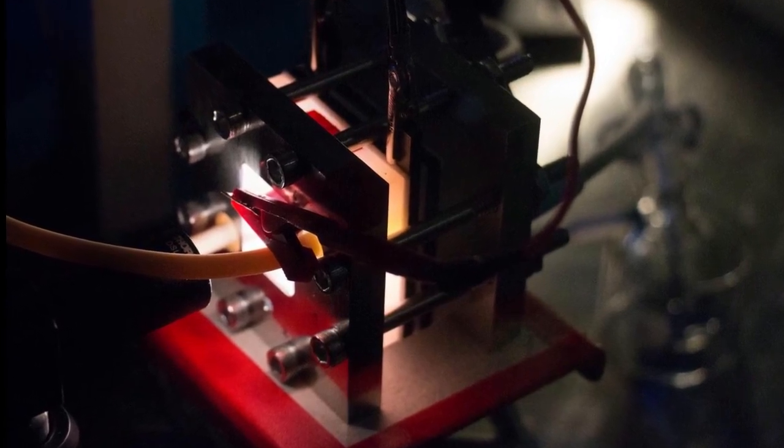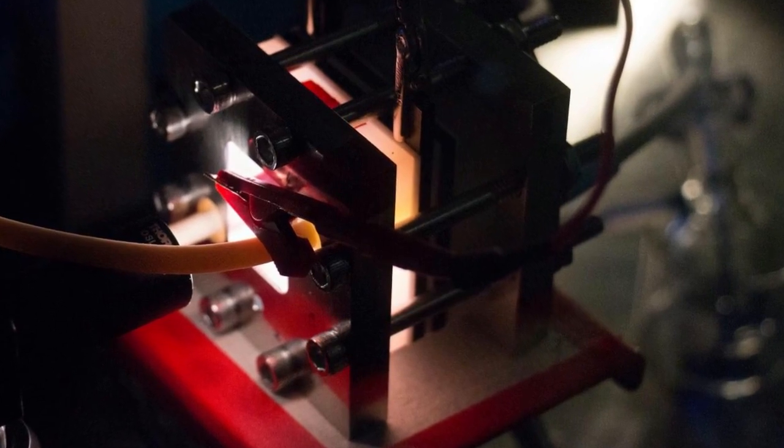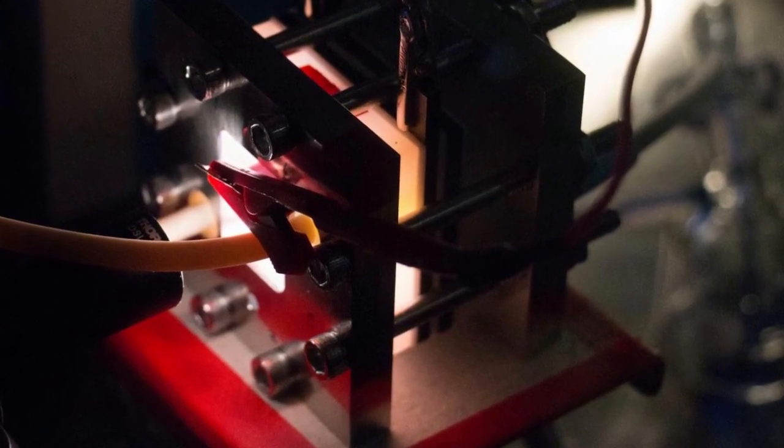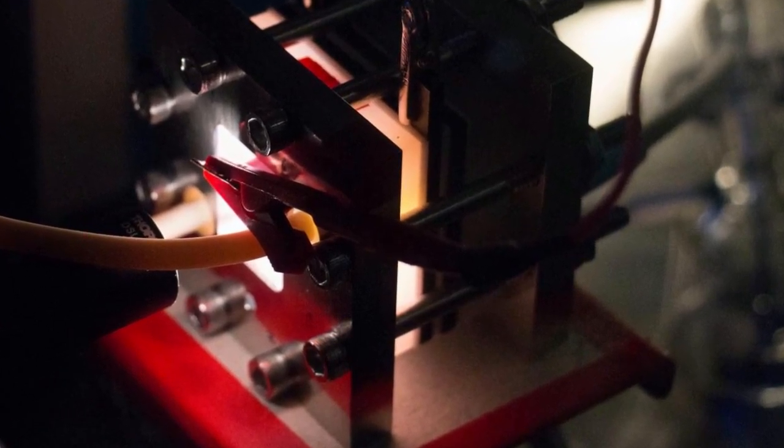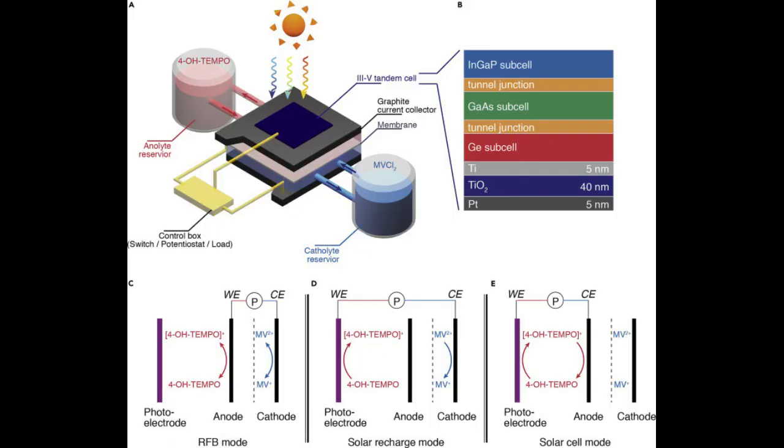But the solar flow battery is designed to perform like both. Compared with separated solar energy conversion and electrochemical energy storage devices, combining the functions into a single, integrated device could be a more efficient, scalable, compact and cost-effective approach to utilizing solar energy.